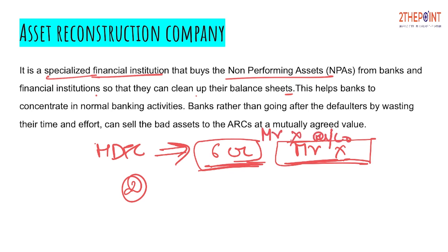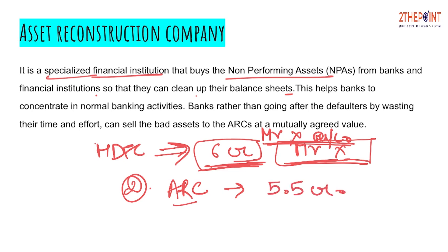The other option HDFC has is to sell Mr. X's account. HDFC can sell this Mr. X account to an Asset Reconstruction Company for a value less than 6 crore, at a price HDFC and the ARC mutually negotiate. Let's suppose the ARC buys this Mr. X account at 5.5 crore. HDFC will receive 5.5 crore and will close the account of Mr. X in its books. This account has now been taken over by the ARC.